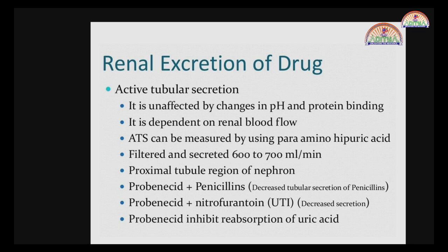Glomerular filtration occurs at a rate of 120 mL per minute, while active tubular secretion occurs at a rate of 600 to 700 mL per minute. The penicillin and probenecid combination can prevent the secretion of penicillin — probenecid actively undergoes excretion instead of penicillin. These are some examples of drugs eliminated by active tubular secretion.